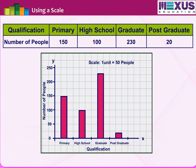Now draw the graph. From the graph, we conclude that people with a graduate degree are more, while the postgraduate number is very less. Similarly, as per the given data, you can choose the scale in a convenient way so that the graph appears simple and clear to understand.